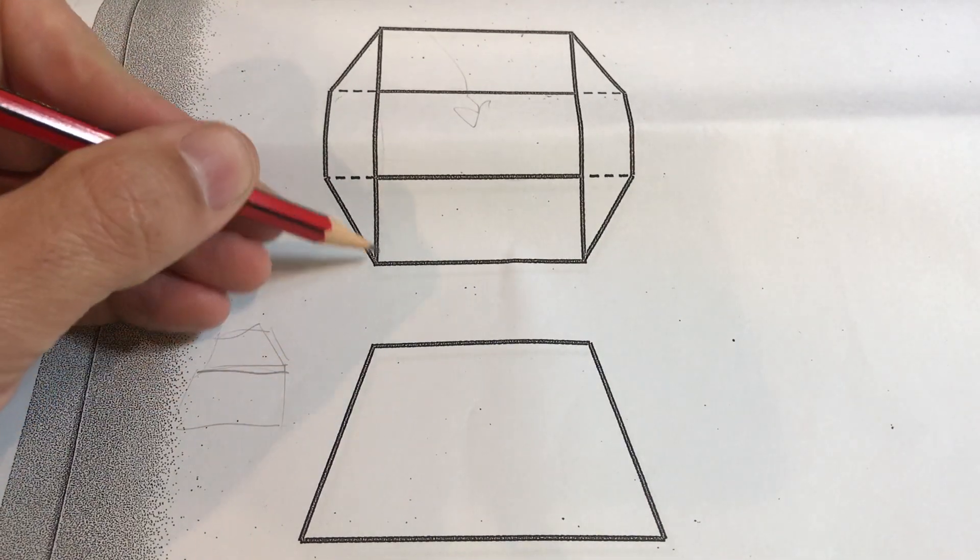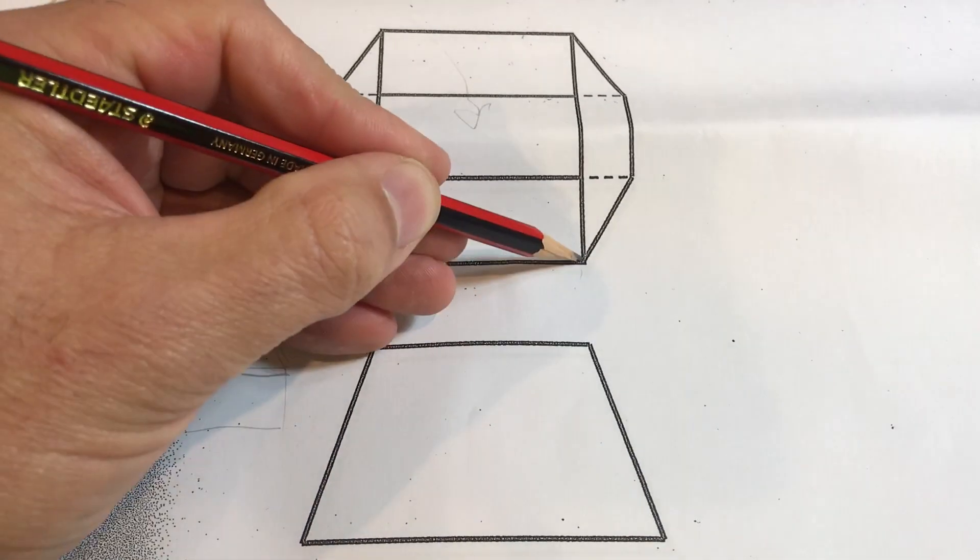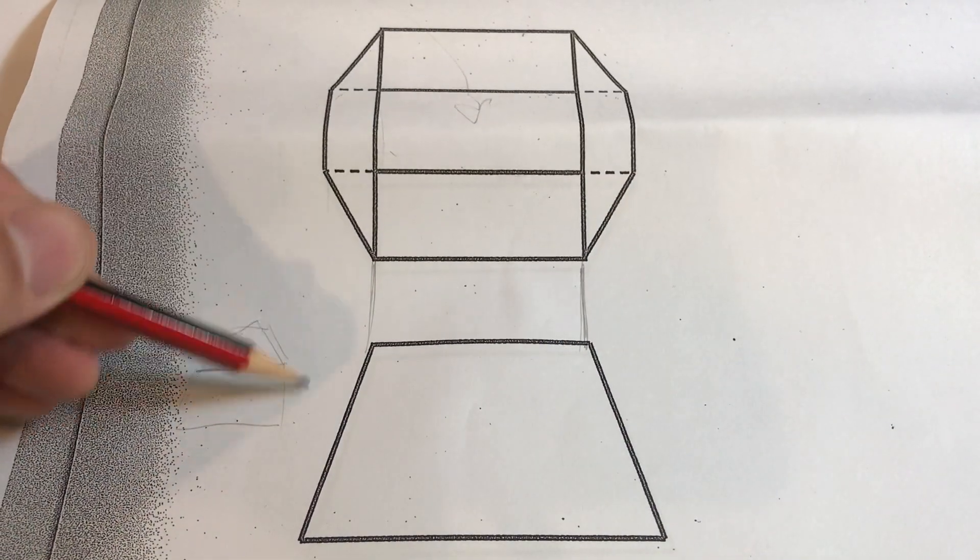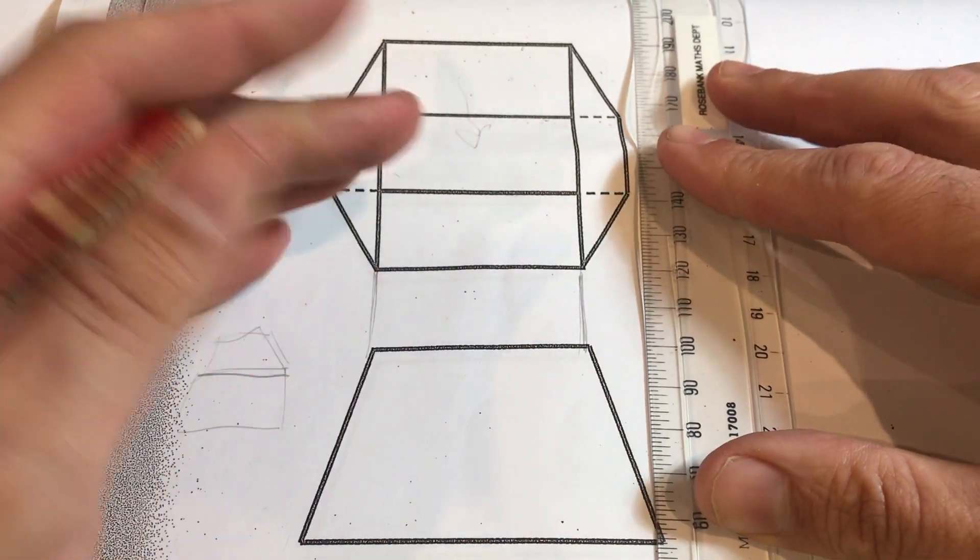So you can see now that from the top view to the side view you can drop down lines, construction lines, to tell you that that's how they've done this projection. If you drop a line down and let's do this like we're real technical drawers.